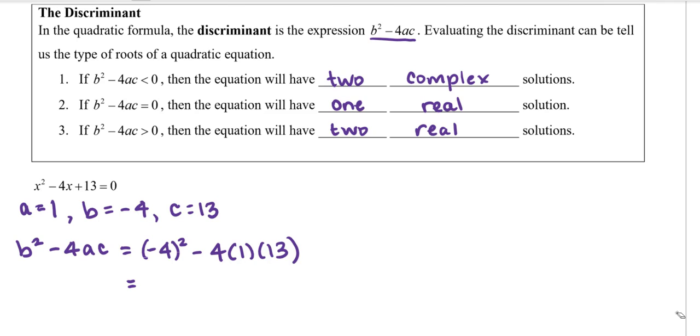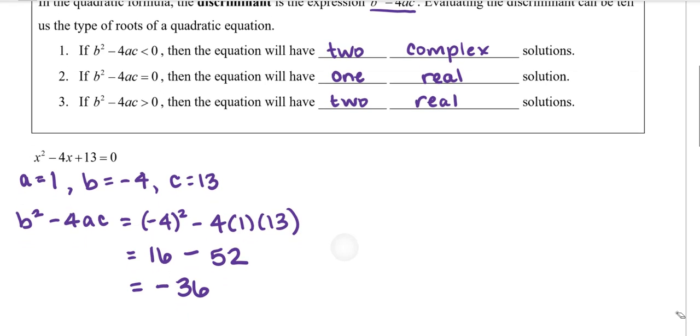So negative 4 squared, negative 4 times negative 4 is 16, minus 4 times 1 is 4, times 13 is 52. And then 16 minus 52 is negative 36. So we get a discriminant of negative 36. So our discriminant is less than 0. So we have two complex solutions according to the discriminant.